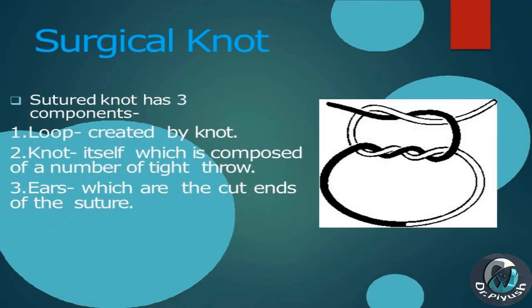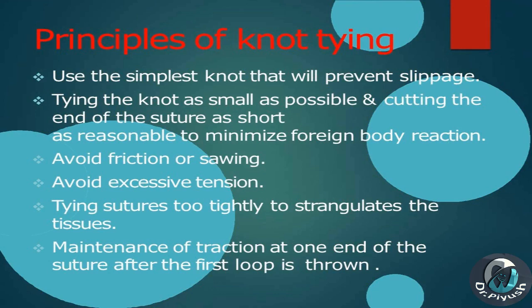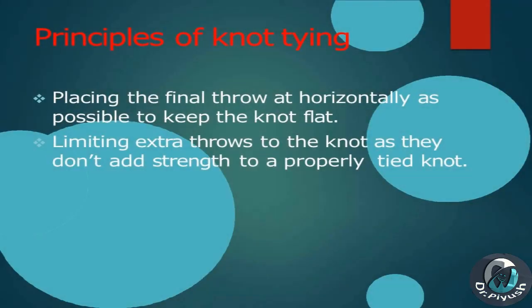Surgical knot has 3 components: 1. Loop created by the knot, 2. Knot itself, composed of a number of tight throws, 3. Ears, which are the cut ends of the suture. Principles of knot tying: use the simplest knot that will prevent slippage; tie the knot as small as possible and cut the ends as short as reasonable to minimize foreign body reaction; avoid friction or sawing; avoid excessive tension that could strangulate the tissues; maintain traction at one end of the suture after the first loop is thrown.